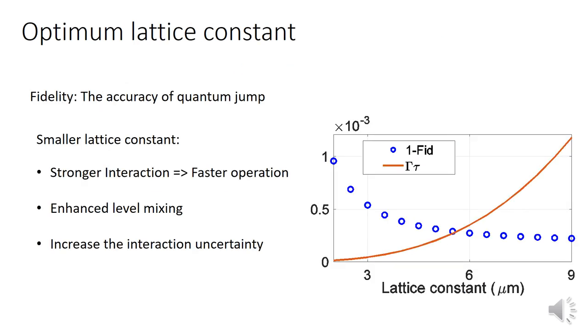Looking for an optimum lattice constant, I define fidelity as the accuracy of quantum jump. At a smaller lattice constant, we can have a stronger interaction and faster operation would be provided, which reduces the loss per step. On the other hand, short distances would result with strong dipolar interaction that mixes different Rydberg pairs and could cause loss.